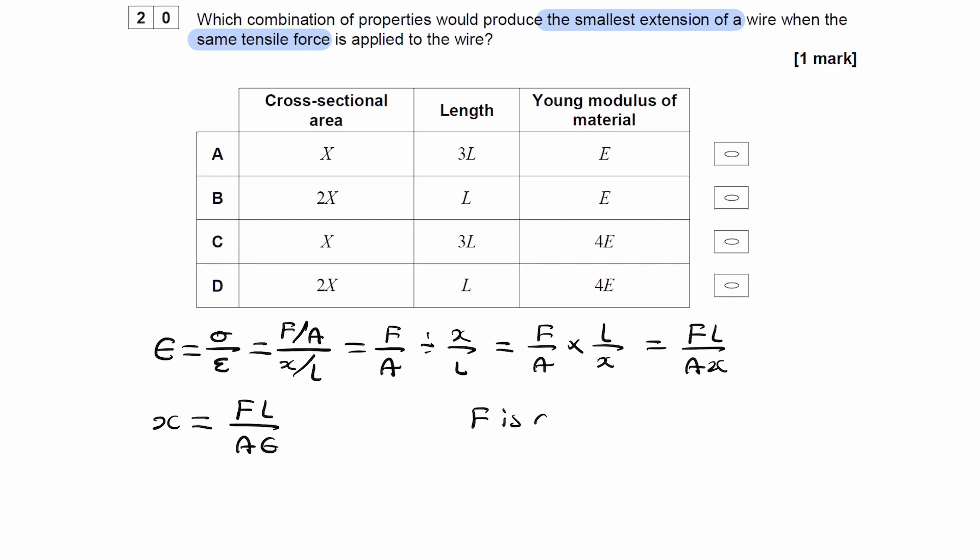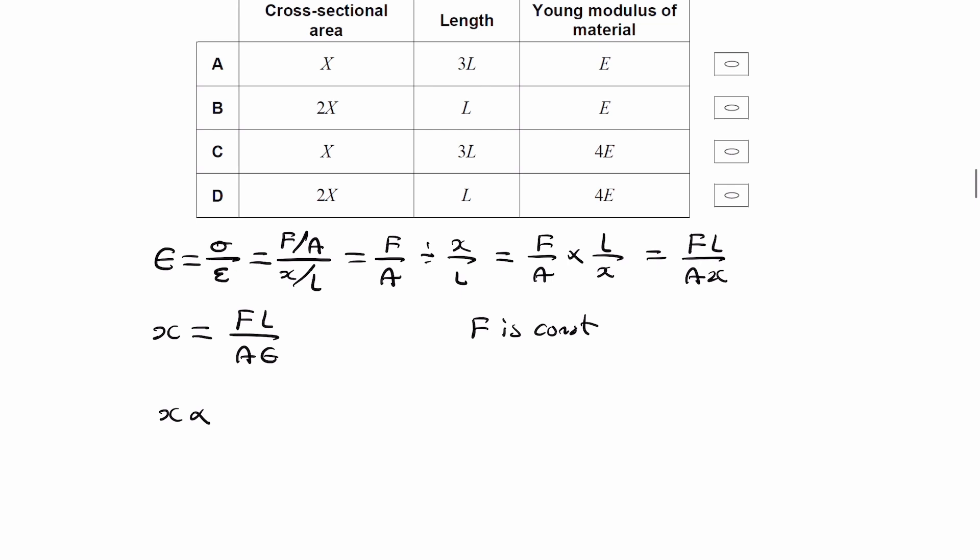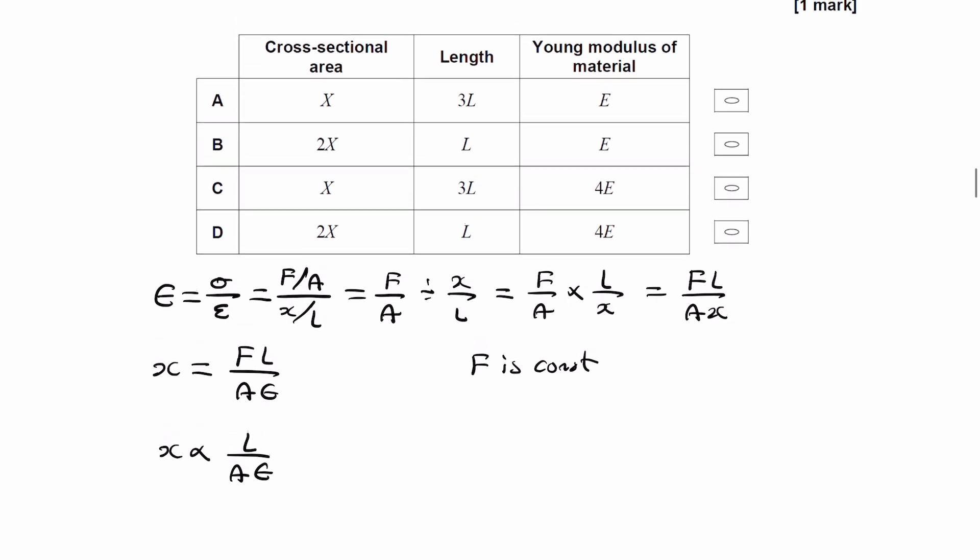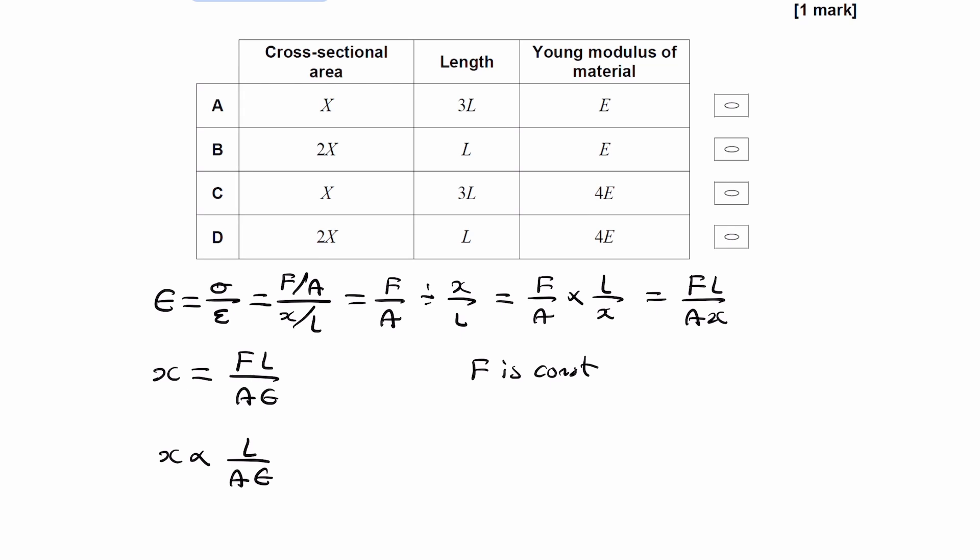So if F is a constant, we can then say that X is proportional to L over A E. So L, A, E are the things that are changing. Force is constant, so we can remove that from the proportionality.